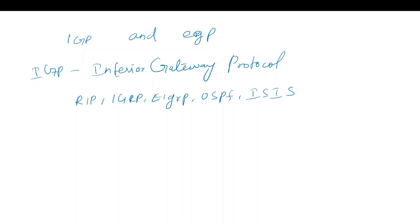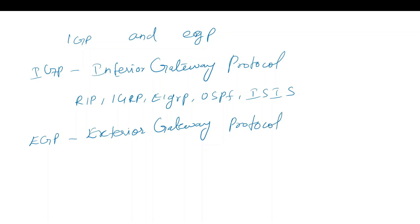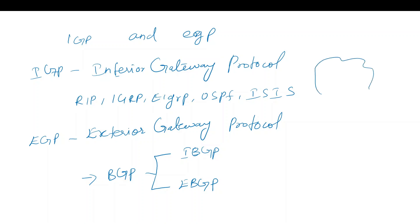This is the IGP category. EGP — the Exterior Gateway Routing Protocol — includes BGP, which has IBGP and EBGP. So, what is the difference between IGP and EGP? There is a number of routers involved. If you have an office campus, university campus, or office environment, this all belongs to an autonomous system.